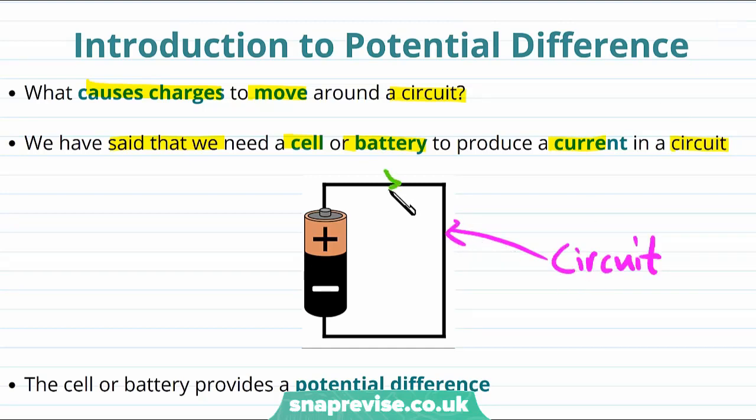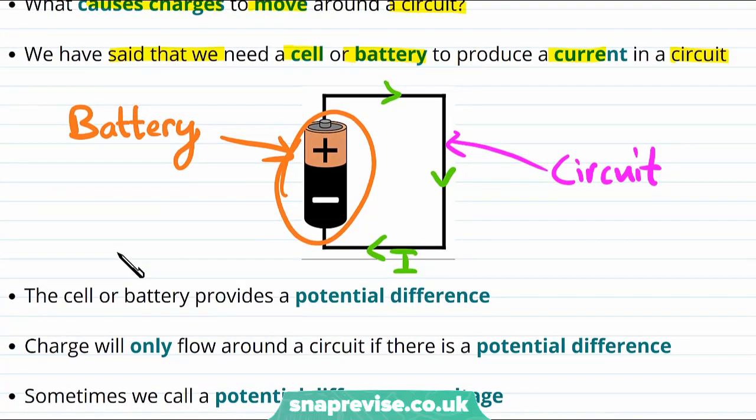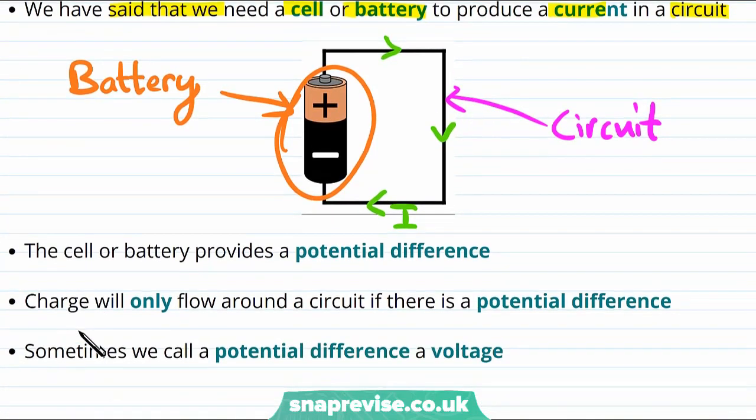And if we want current to flow around these wires, then we need to have a battery. So what does this cell or battery actually do to push this current around a circuit? Well, the cell or battery provides something called a potential difference. And charge will only flow around a circuit if there is a potential difference. Sometimes we call a potential difference a voltage.